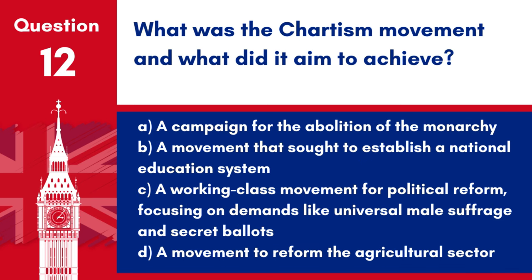Question 12: What was the Chartism movement and what did it aim to achieve? a. A campaign for the abolition of the monarchy. b. A movement that sought to establish a national education system. c. A working-class movement for political reform, focusing on demands like universal male suffrage and secret ballots. d. A movement to reform the agricultural sector. Answer: c. Chartism was significant in the history of British democracy, representing the first mass working-class labour movement in the world.